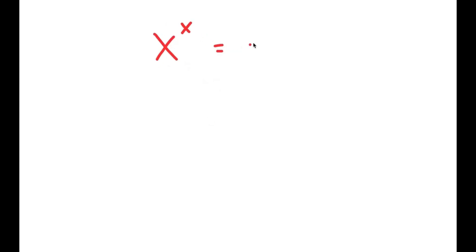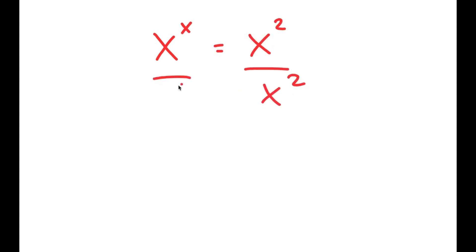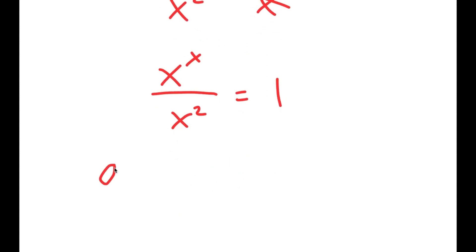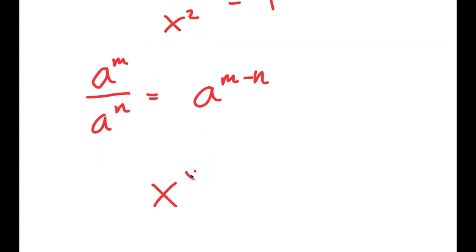In this video, I'm going to solve the equation x to the power of x is equal to x to the power of 2. To solve this, I'm going to first start by dividing both sides by x squared. These two cancel out, and I get x to the power of x over x to the power of 2 is equal to 1. Using the property a to the power of m over a to the power of n equals a to the power of m minus n, I get x to the power of x minus 2 is equal to 1.